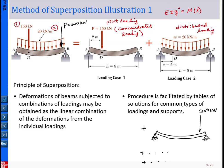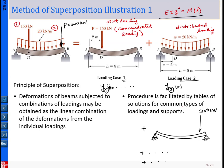Once we have decomposed, we simply solve for individual systems. This is Case 1 — you solve for Case 1, solving the equation corresponding to this case. Then for Case 2, you solve for deflection as a function of x equal to something. In this way, the deflection of the original problem is simply the superposition of those results.